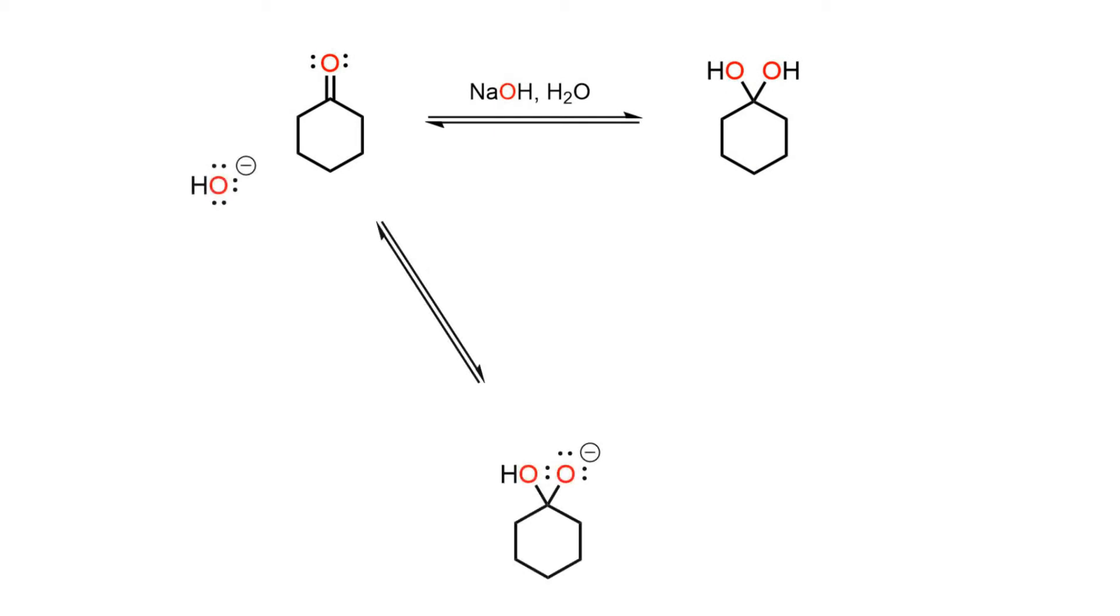Since these reactions are run at high pH, the highly nucleophilic hydroxide is present and able to attack the carbonyl as a nucleophile. This reversible step creates a new sigma bond and deposits the negative charge onto the carbonyl oxygen.